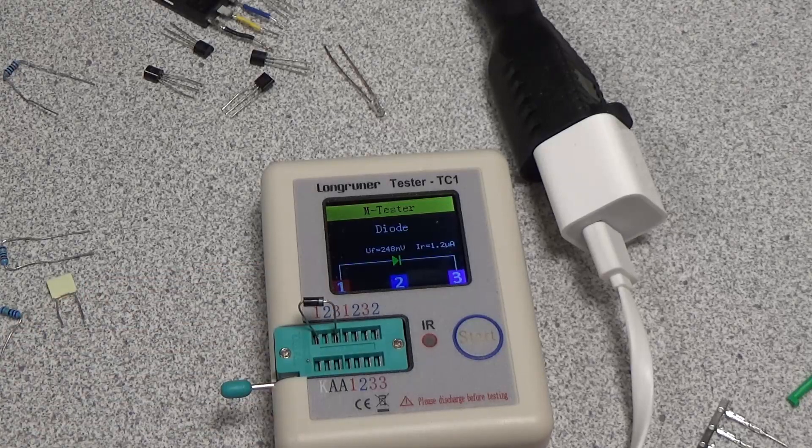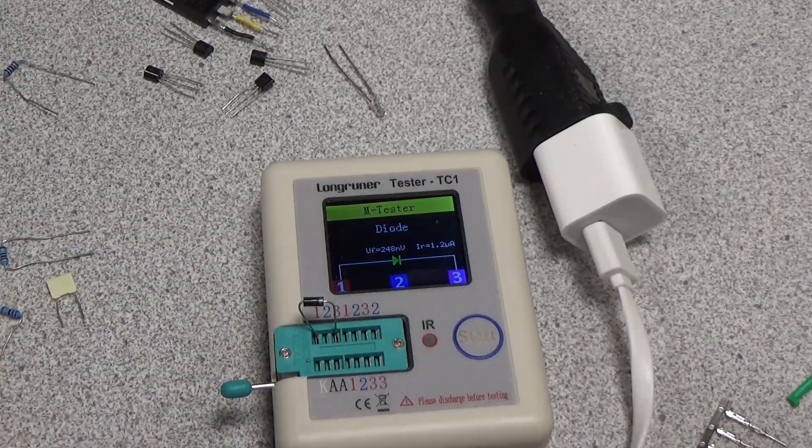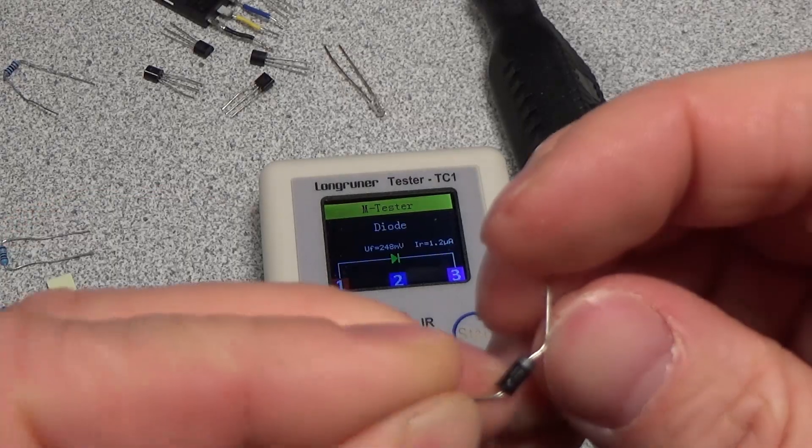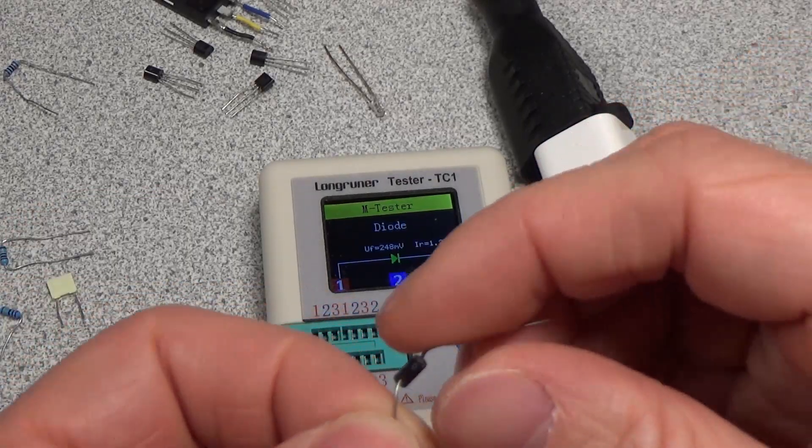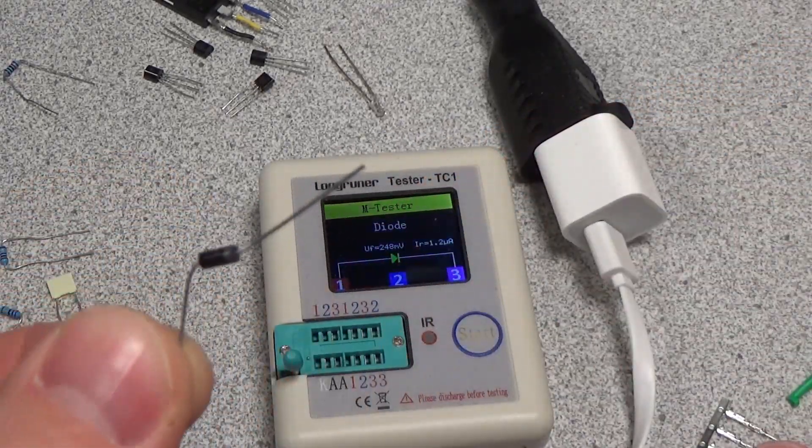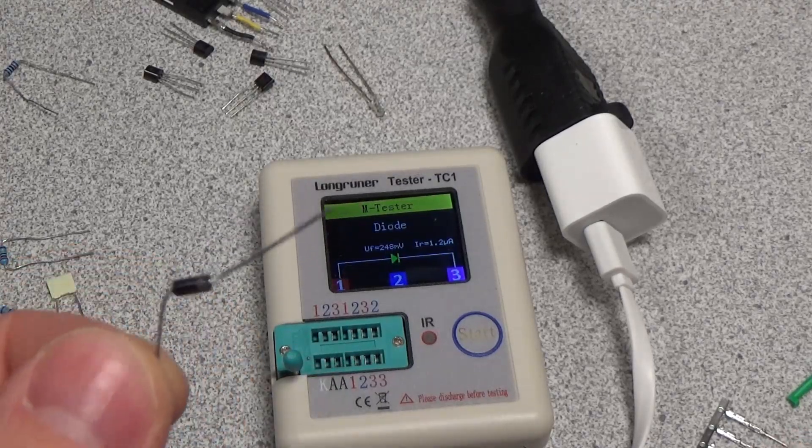So this is a 1N51 something or other. 1N5819, okay. So yep, just a normal 100 volt Schottky diode.